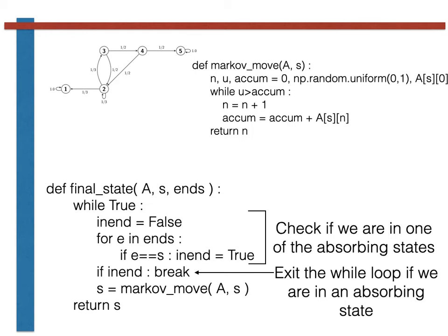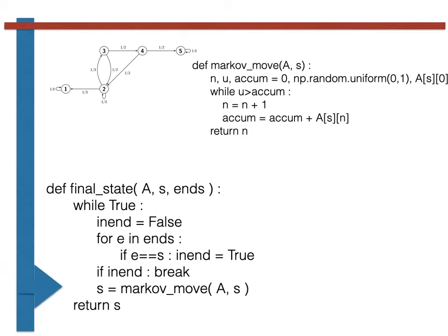Within the body of the loop, all we then need to do is generate the new state in the chain by calling the Markov move function.